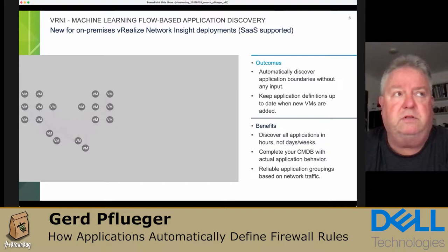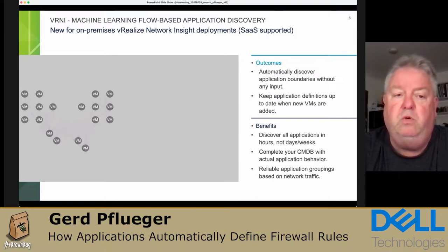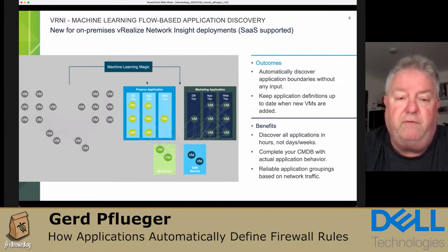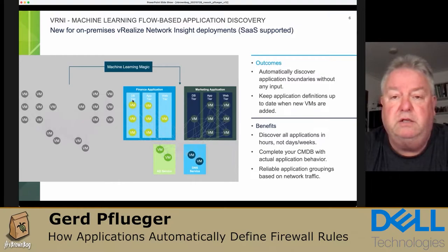Now you have to structure the network with the applications. You start with a bunch of VMs but have no clue what kind of application is behind them. With a little bit of machine learning magic, you'll figure out you have a finance application, a marketing application, some active services like Active Directory and DNS. And you'll also figure out how each application is structured — there is a layer for web, a layer for application, and a layer for database. This is all figured out by Network Insight.